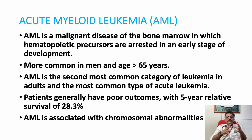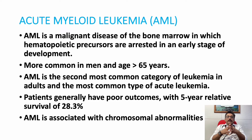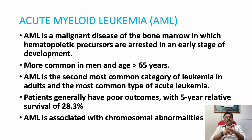AML is commonly seen in elderly individuals compared to other hematological disorders. It is the second most common category of leukemia in adults and the most common type of acute leukemia. The outcome of AML is very poor — survival is only around 28 percent.